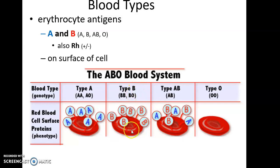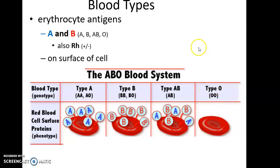If type B, you have B antigens on the surface of your blood cells. If type AB, you have both A and B on the surface of your red blood cells. And if you have type O, there are no antigens on the surface of your blood cells. There's also the Rh factor, which is another important antigen found on the surface of our cells.